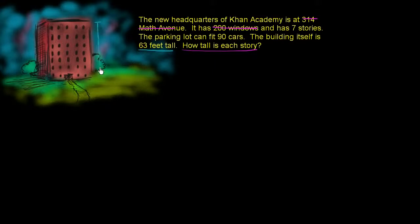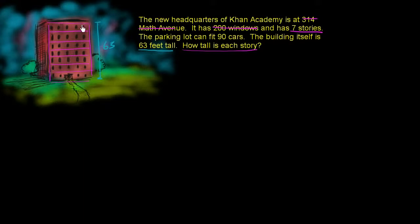So this height right over here — the building's height — is 63 feet tall. And they tell us that it has seven stories: one, two, three, four, five, six, and seven. So it has seven stories. So if we divide 63 by seven, we should figure out how tall each story is.